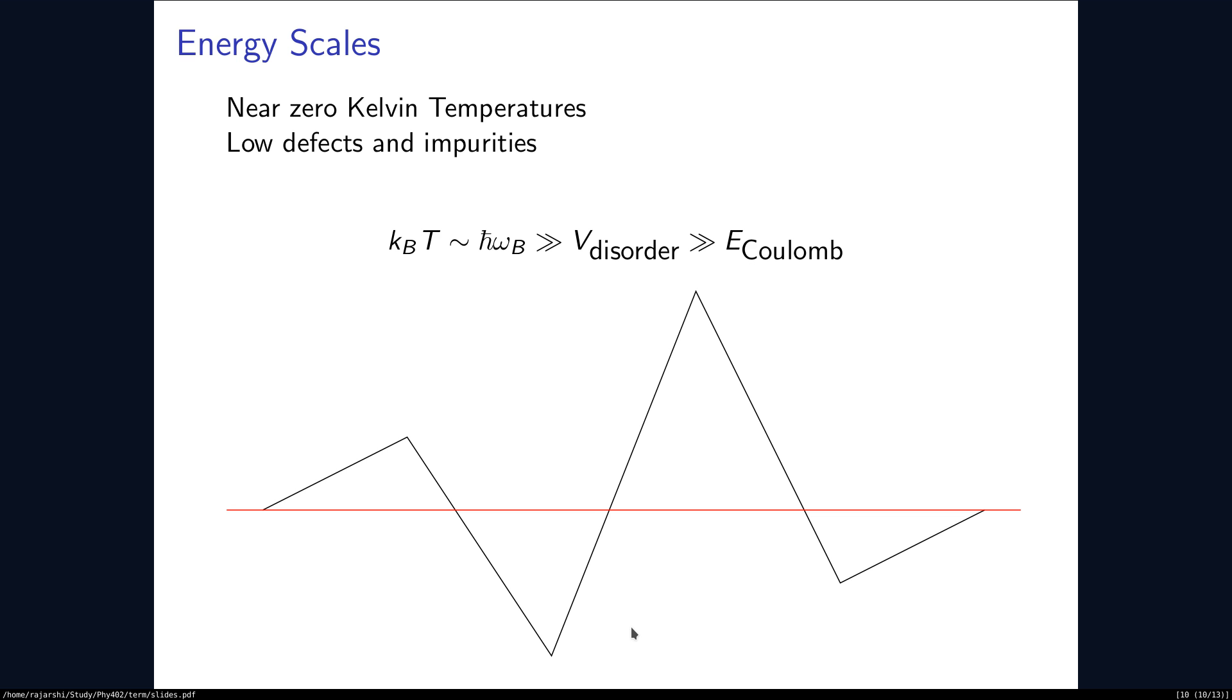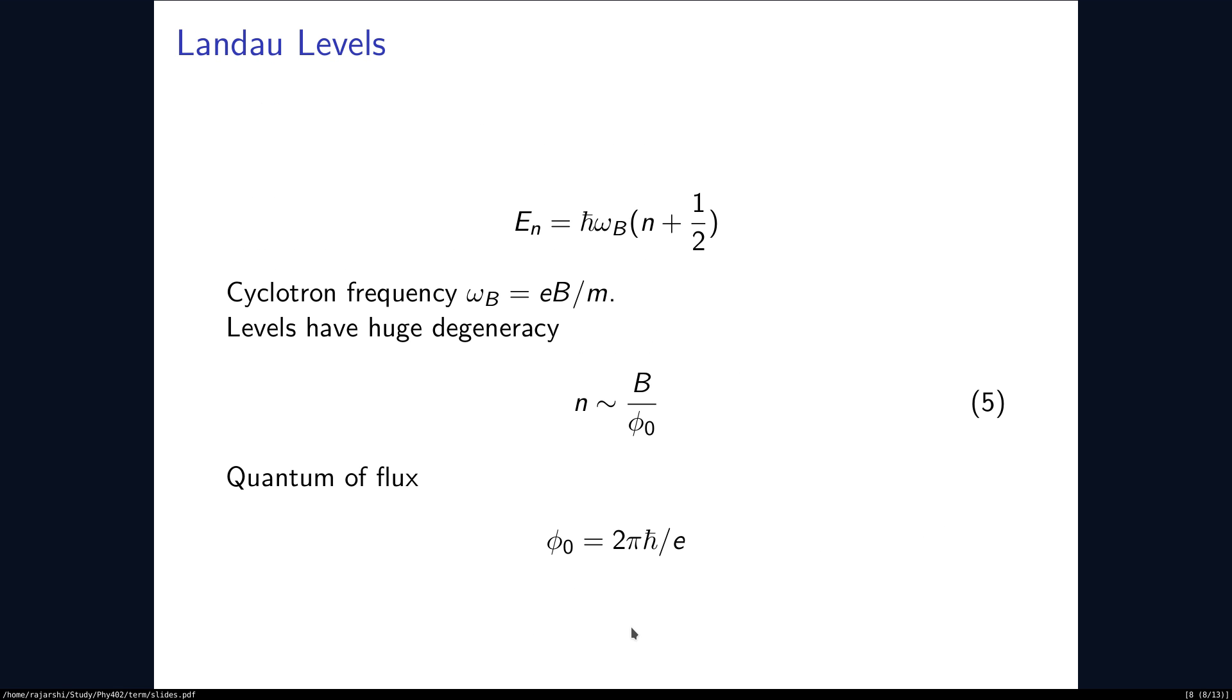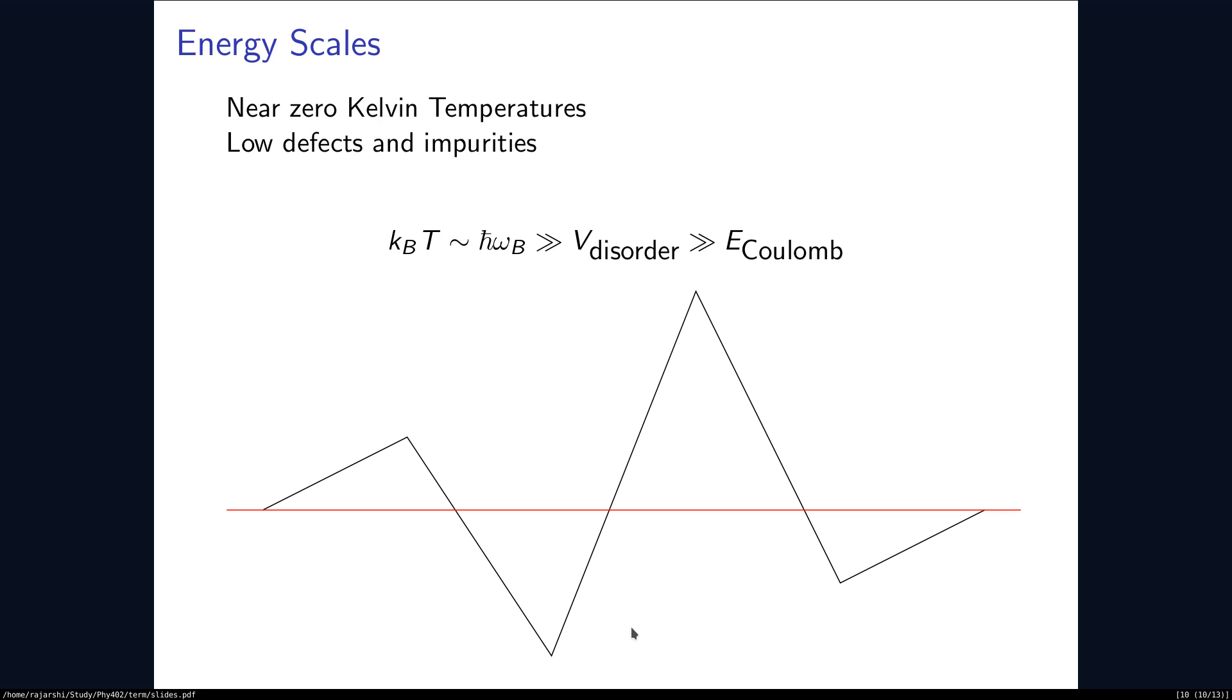To understand what happens for the magnetic field which is not an integral multiple of B by phi naught, we have to consider the potential created by disorder in the crystal, that is the impurities and defects which are there in the crystal. And these have to be significantly lower than h bar omega B, which is the energy scale of the Landau levels. And the energy scale of the Landau levels have to be comparable to the temperature KBT.